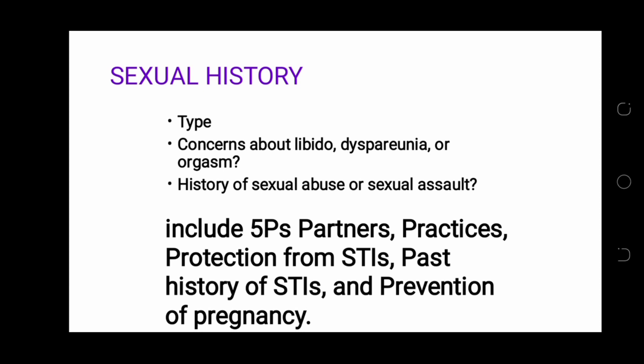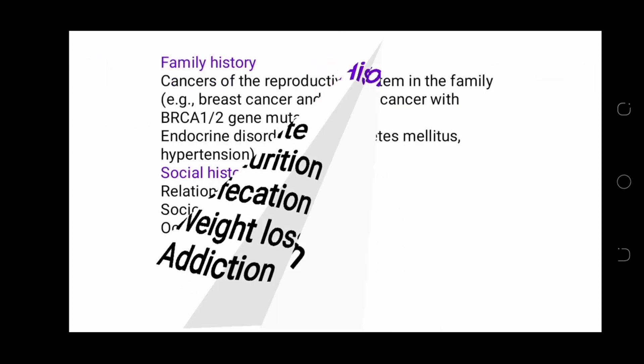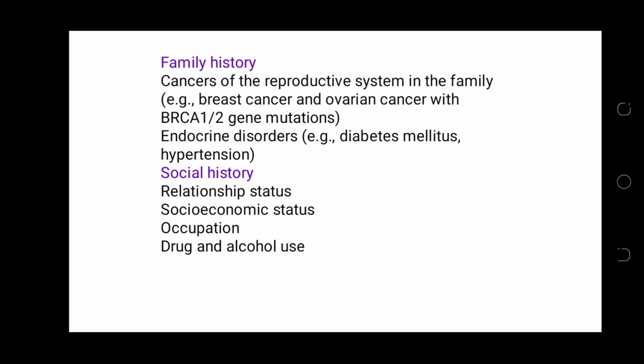Consider sexual history: type of sexual intercourse, concerns about libido, dyspareunia or orgasm, history of sexual abuse or sexual assault. Include the five P's — partners, practices during coitus, protection from STIs, persistence of STIs, and prevention of pregnancy. Personal history — consider sleep, appetite, urination, defecation, weight loss or gain, or any addiction to drugs. Family history is very important — consider cancer of the reproductive system, such as breast cancer or ovarian cancer with BRCA1 or BRCA2 gene mutation, and endocrine disorders such as diabetes mellitus or hypertension. Consider social history: relationship status, socioeconomic status, occupation, and drug and alcohol use.